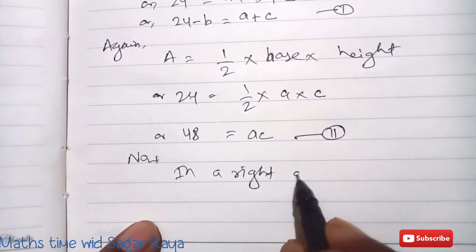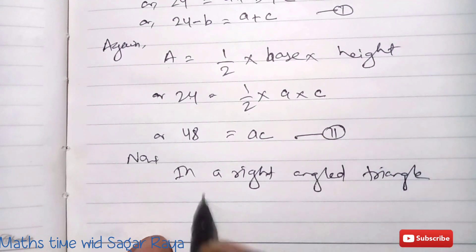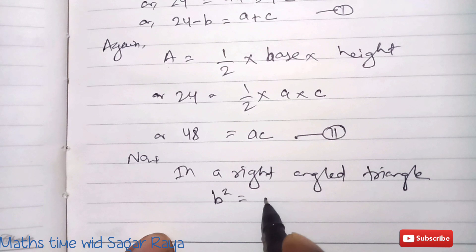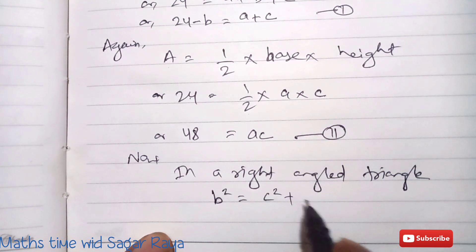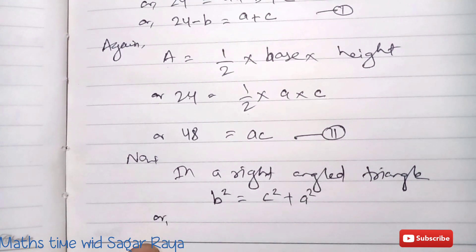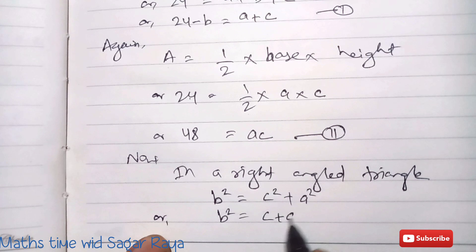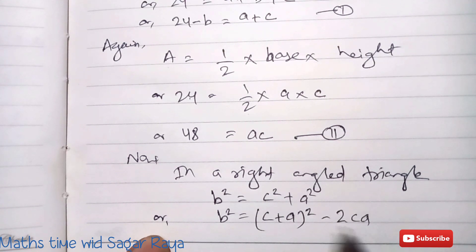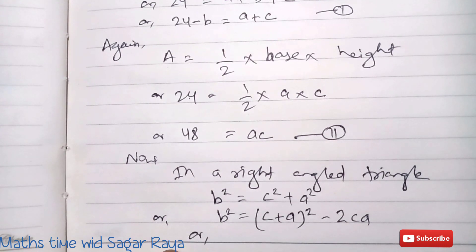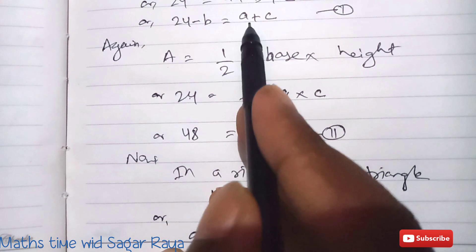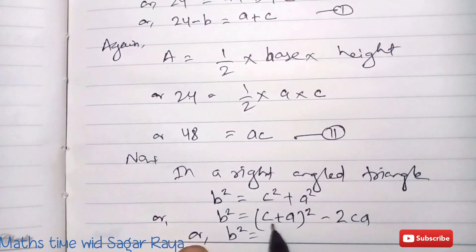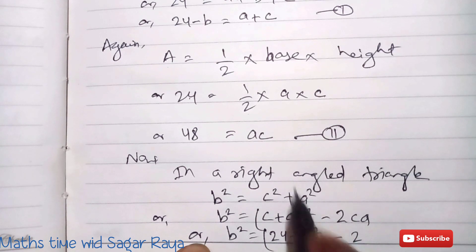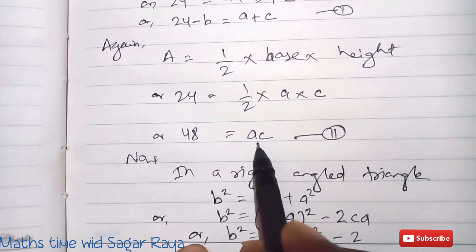Now, b² = c² + a², which can be rewritten as (c + a)² − 2ca. Since from equation 1, a + c = 24 − b, we substitute: b² = (24 − b)² − 2·ca. And from equation 2, ac = 48, so we substitute: b² = (24 − b)² − 2 × 48.